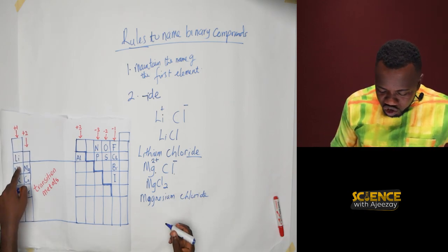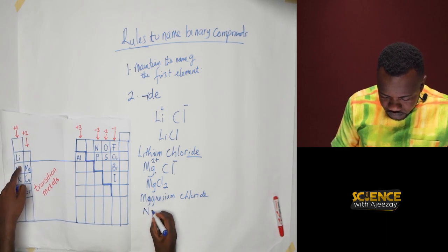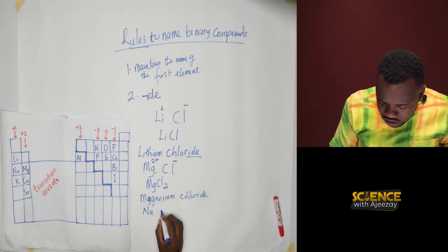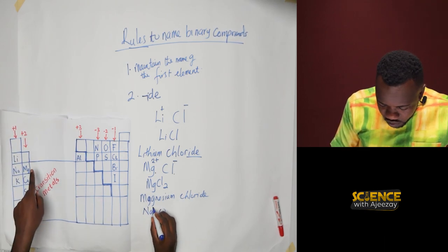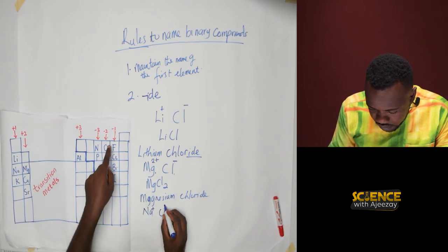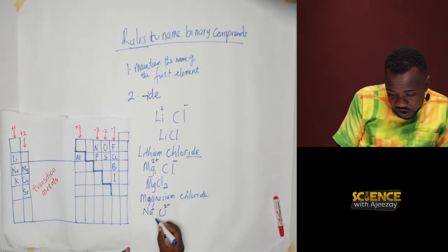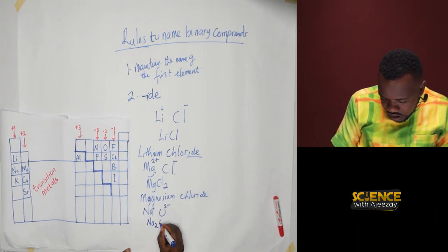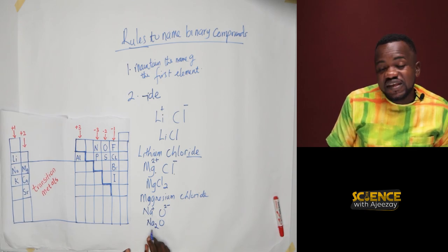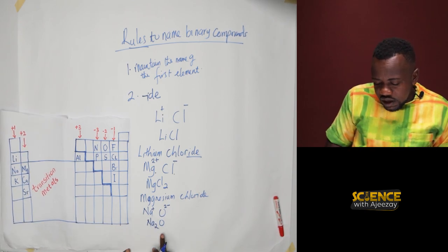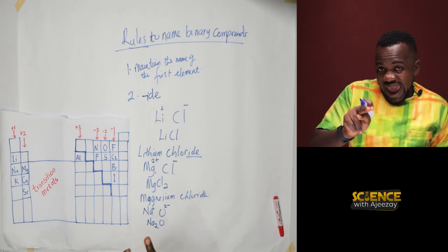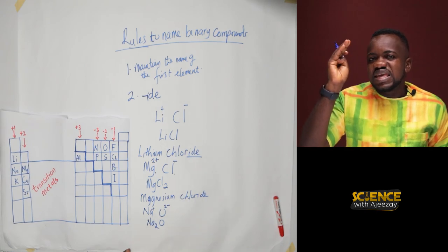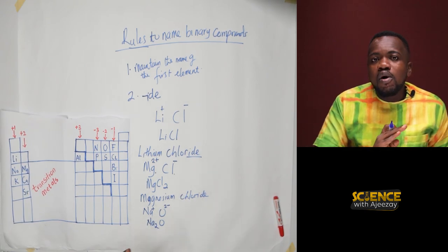Let's say we have sodium and oxygen. Sodium is plus one and oxygen is minus two. After interchanging the charges and balancing, we maintain the name of the first element as sodium. Oxygen: you drop '-ygen' and replace with '-ide', so it becomes oxide. The compound is sodium oxide.